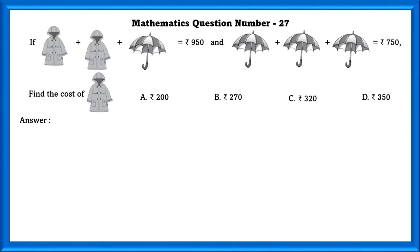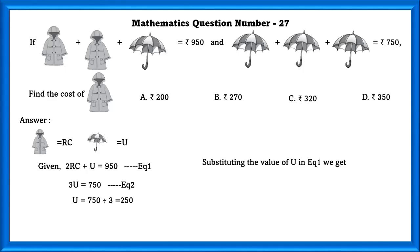Mathematics question number 27. If 2 raincoats plus 1 umbrella is equal to 950 rupees and 3 umbrellas is equal to 750 rupees, find the cost of raincoat. We can take raincoat as RC and umbrella as U. Given 2RC plus U is equal to 950, we can take this as equation 1. 3U is equal to 750, that is equation 2. In order to find the value of U, we have to divide 750 by 3. If we do that we will get 250. So U is equal to 250. And substituting the value of U in equation 1, we get 2RC plus 250 which is equal to 950. So RC is equal to 350.